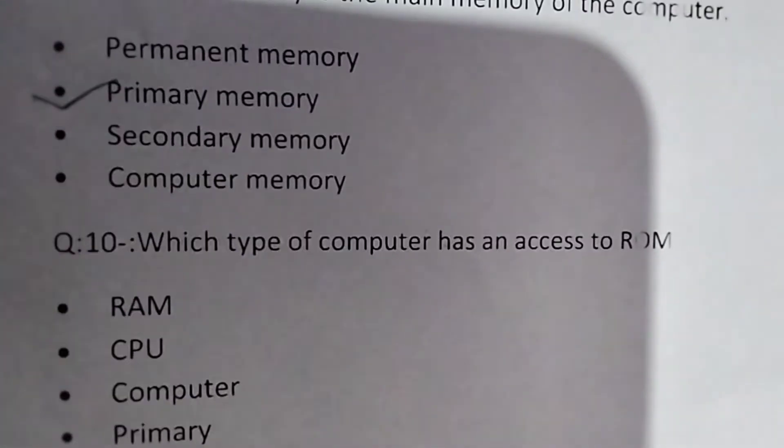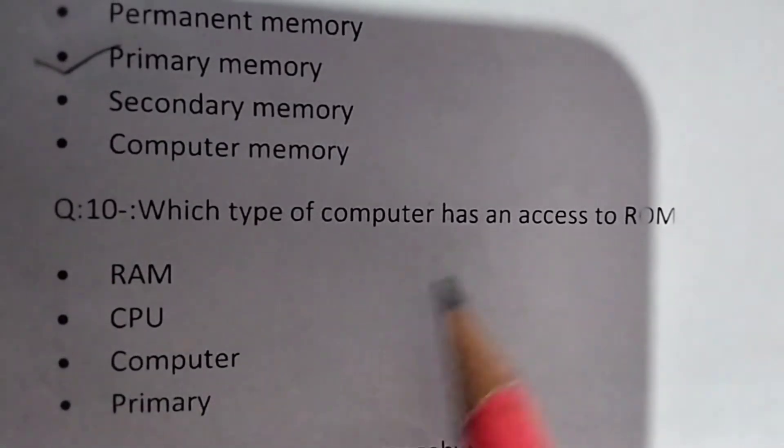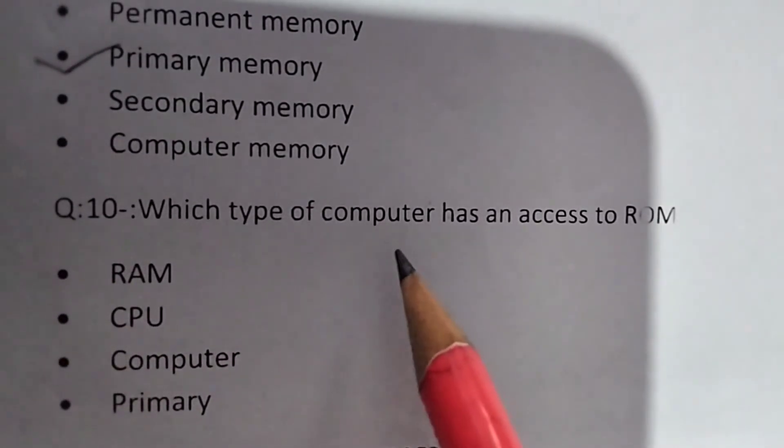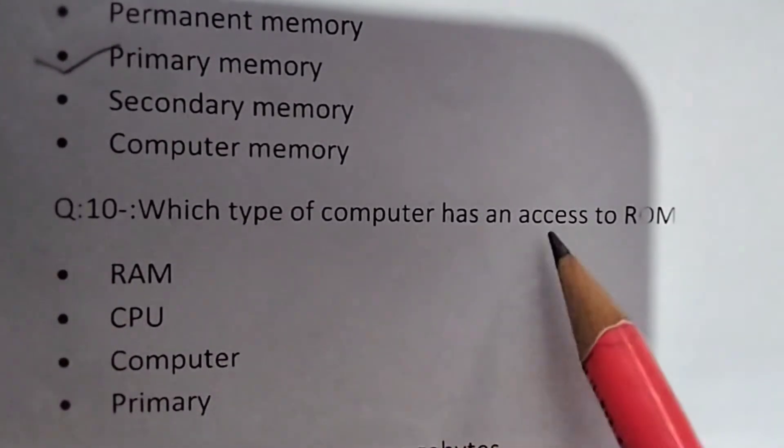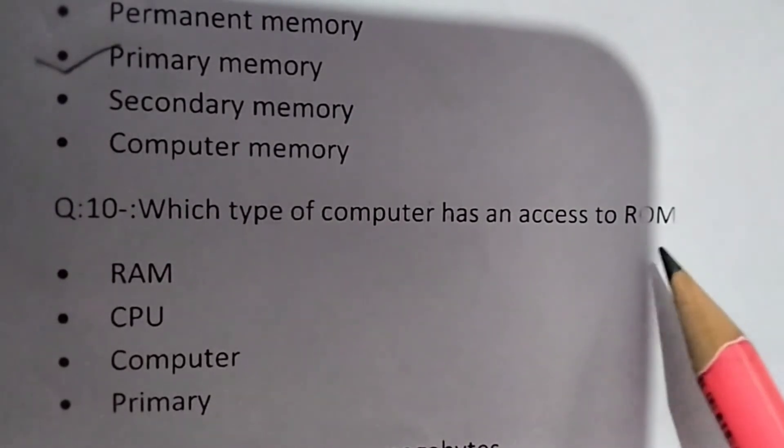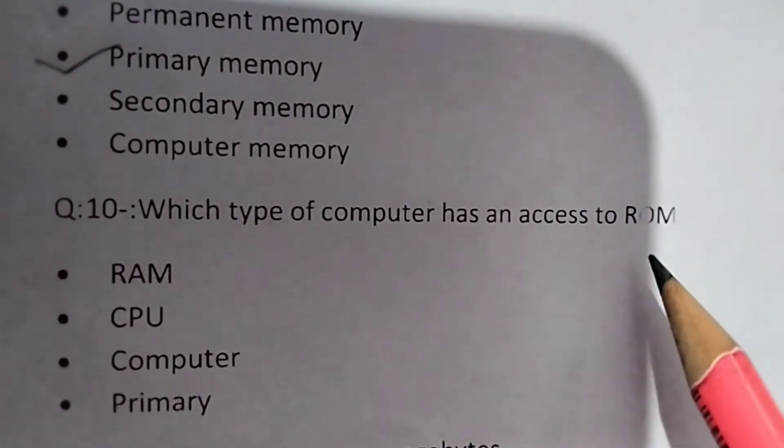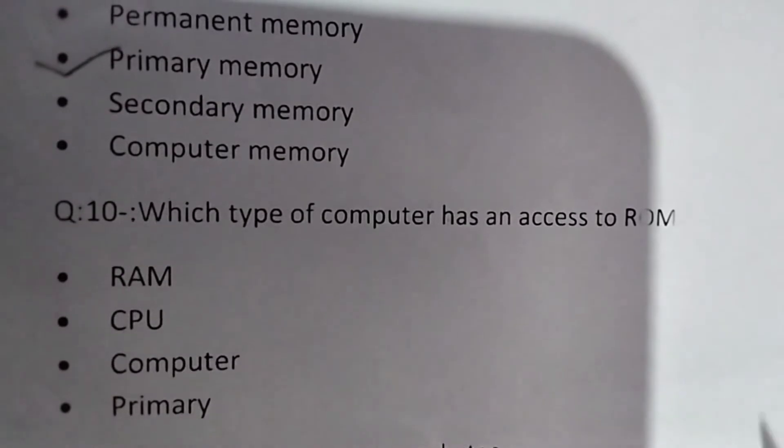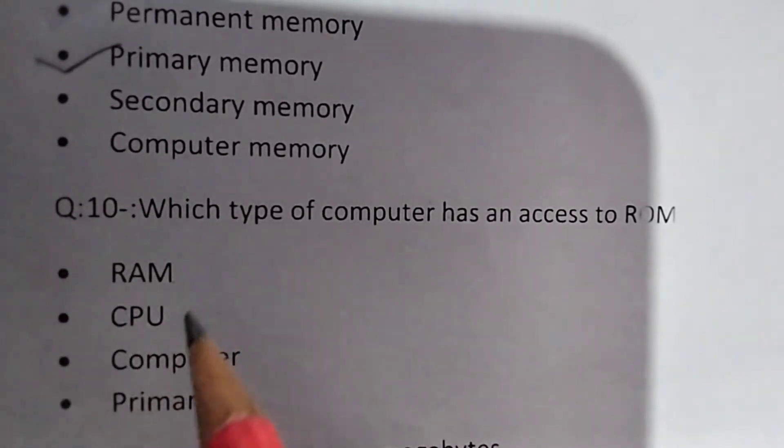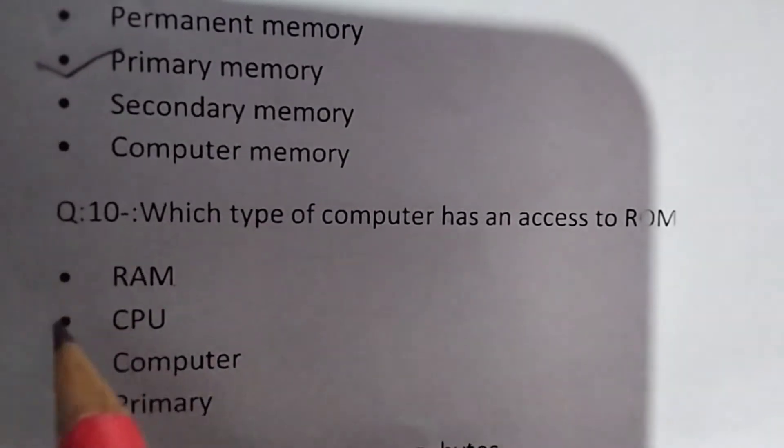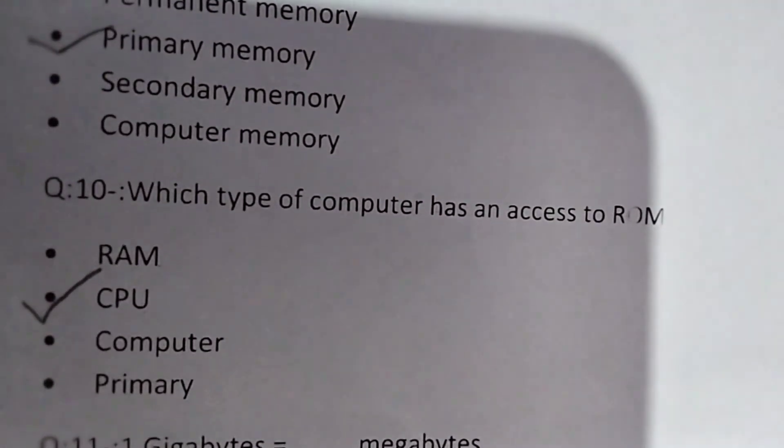Next question is: Which type of computer has an access to ROM? Which type of memory has access to ROM? RAM, CPU, computer or primary? The answer is CPU.